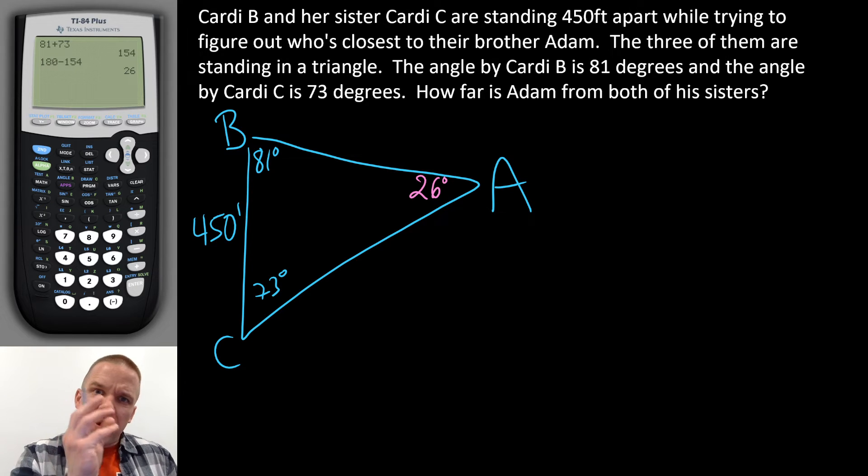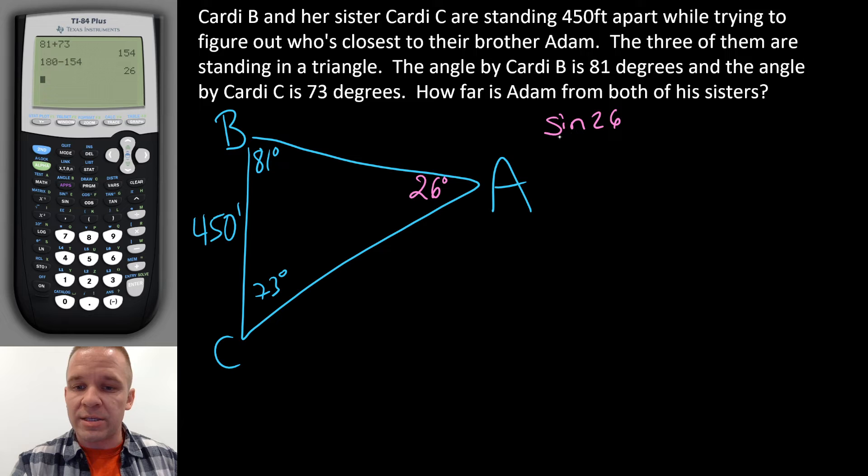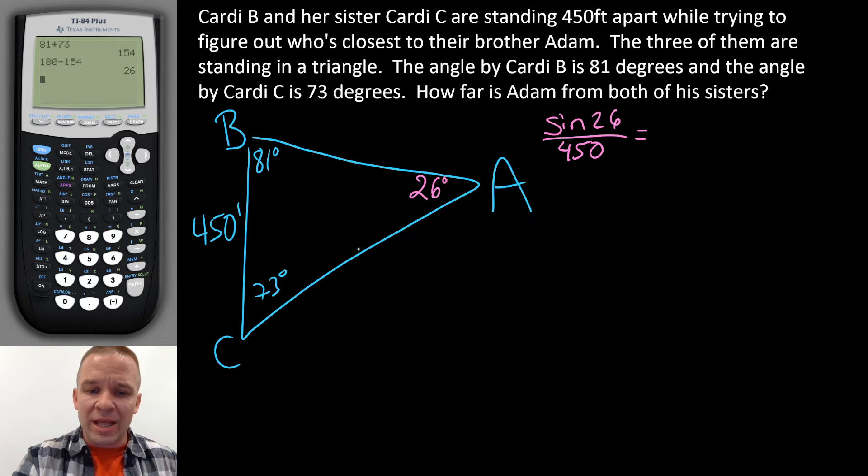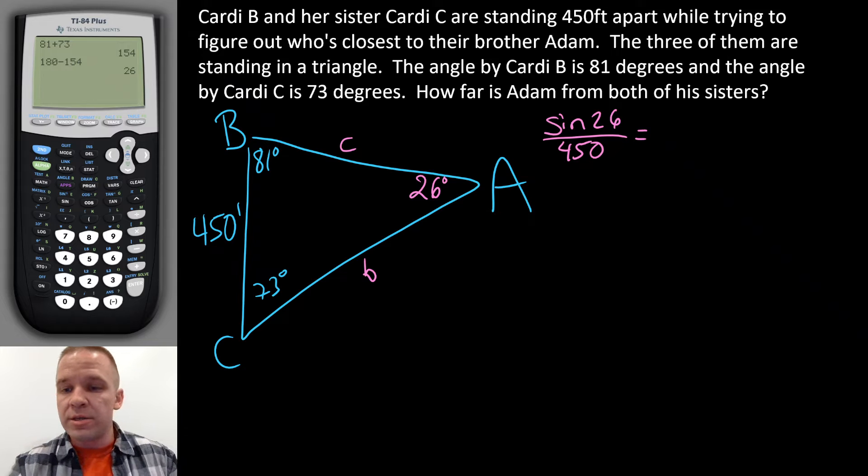So now I have a pair of information. I have an angle and a side across. That means I can set up a law of sines. So I can do sine of 26 divided by 450. And I can set up another one to figure out the distance from Cardi C to Adam. I'd be using this one right here. I'm going to call this little b over here. This is across from big B. This is little c right here. So we got sine of 81 divided by b.